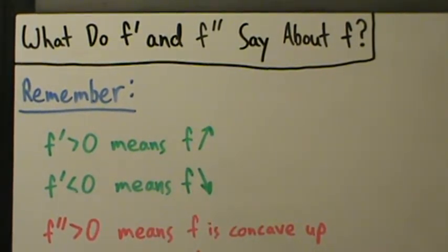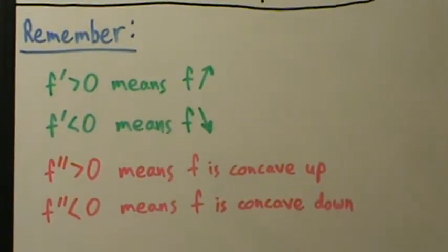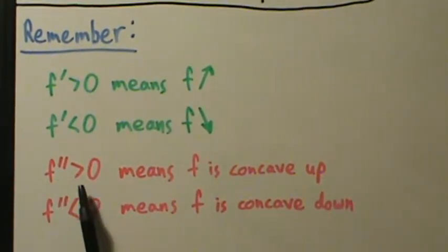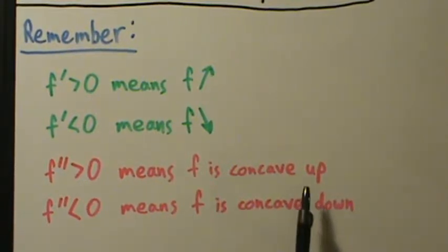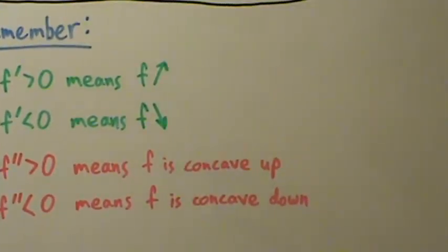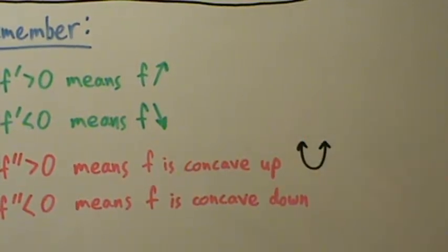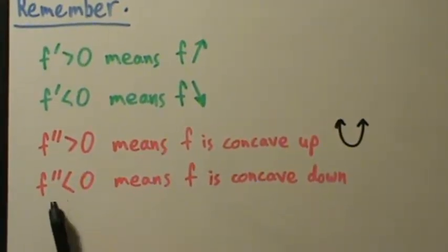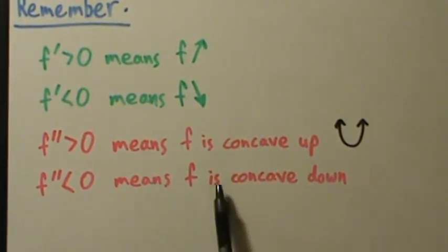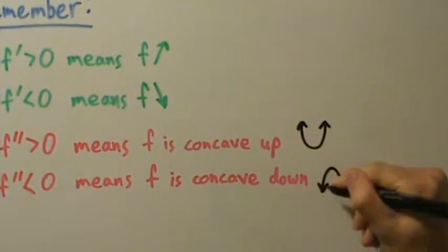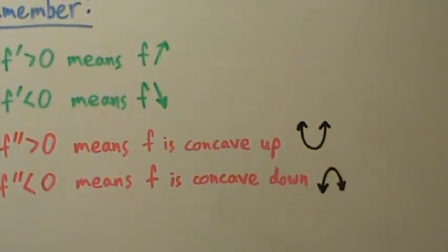More recently we were talking about the second derivative. Remember that if f double prime is positive, that means f is concave up. Concave up pretty much just looks like a bowl — like y equals x squared, something like that. And if f double prime is negative, that means f is concave down, pretty much like an upside down bowl. y equals negative x squared would be an example of that.